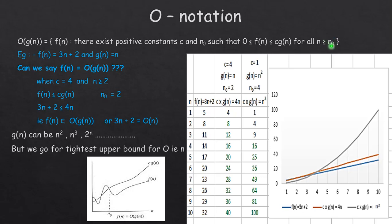For some value n₀, n must be greater than n₀. I will explain with an example. Here the running time function is f(n) = 3n + 2, and the standard function is g(n) = n. Can we say f(n) = O(g(n))? When the constant c = 4 and n₀ = 2, we can say f(n) ≤ c·g(n), that is 3n + 2 ≤ 4n.